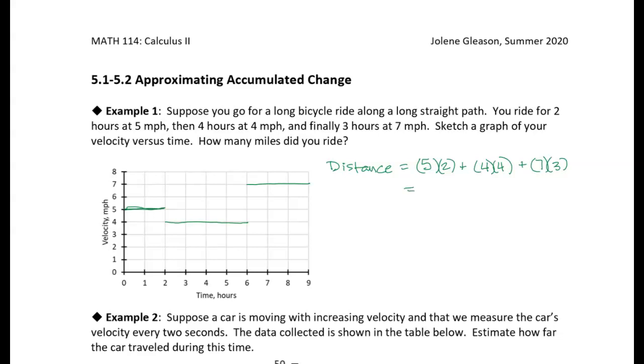So what do I get? I got 10 plus 16 plus 21, which gives me a total of 47 miles. Now, we're done with the problem. We're done with everything that we were asked to do in this problem.